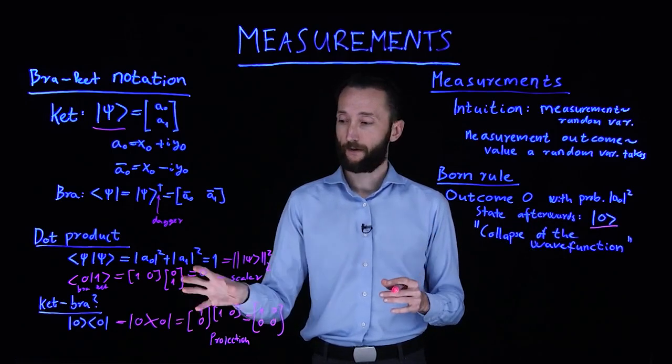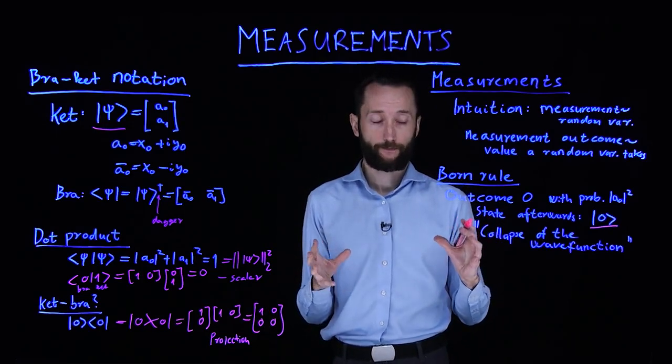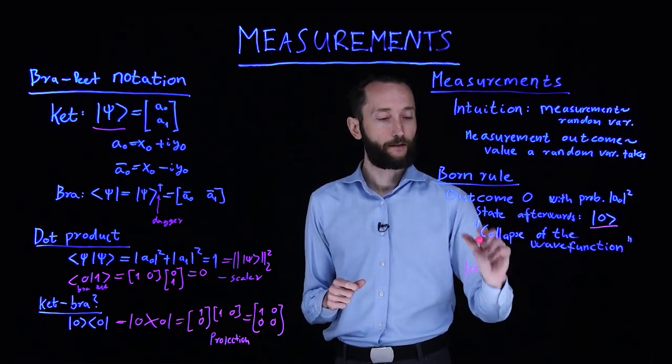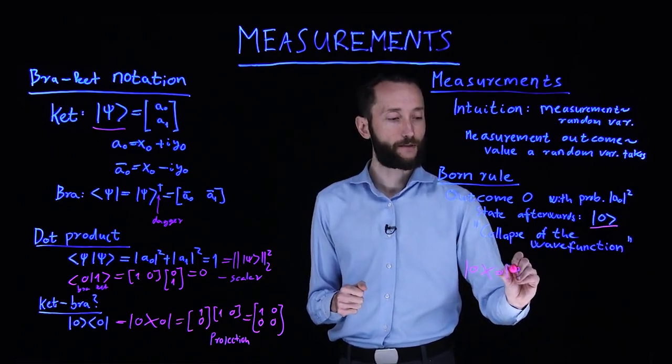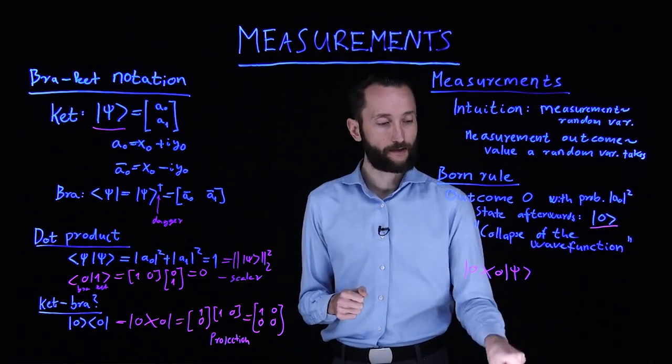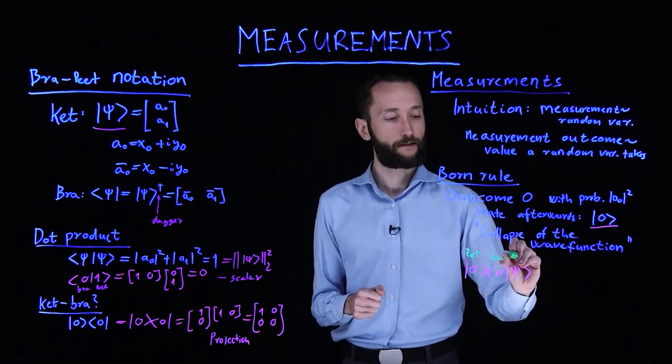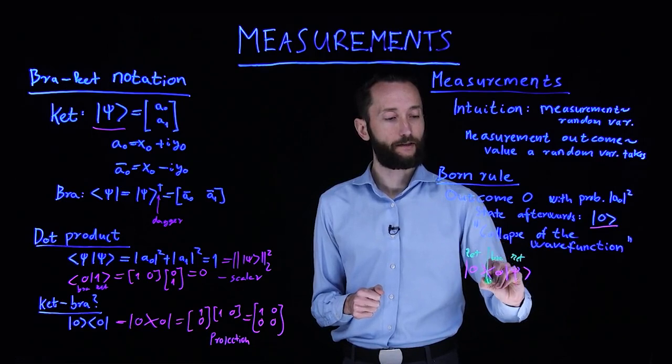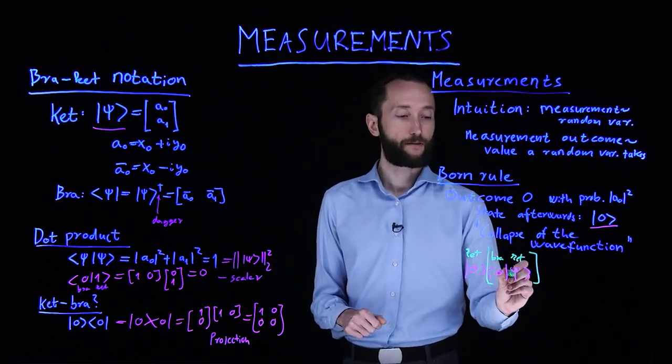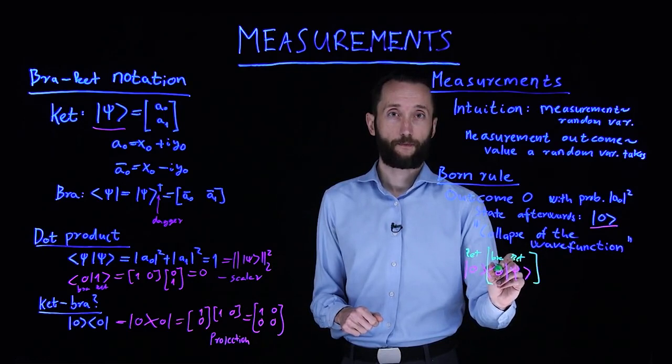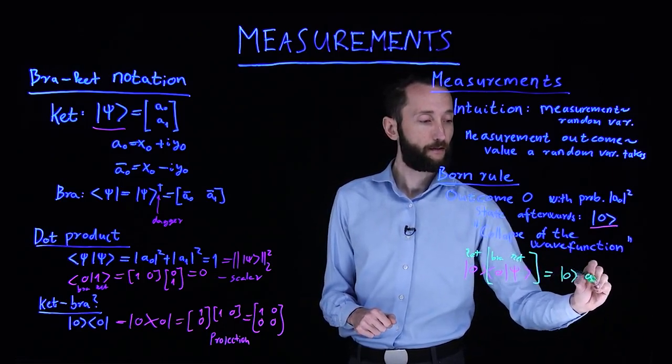The way we write it down is actually with this formalism. The measurement outcome is actually a projection. For instance, if we want to model that we get the outcome 0, then we take the corresponding projection and we apply it on the quantum state. If you look at this carefully, this is a ket, this is a bra, and this is a ket. If you look at only this part, that's just the bra and the ket, which means that this is going to be a scalar. In fact, this is just a projection to this particular basis vector.